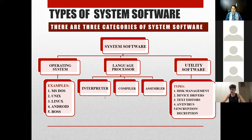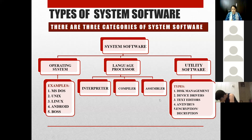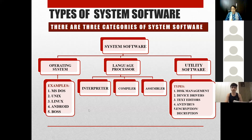When high level languages were developed, we use the interpreter. After that, compiler. Interpreter and compiler both convert high level language into machine language. Interpreter converts line by line, and compiler converts in one go, so it is faster compared to the interpreter.